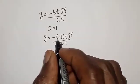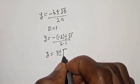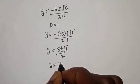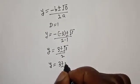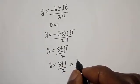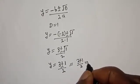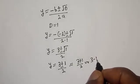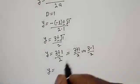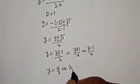y equals 3 plus or minus square root of 1, all over 2. Since square root of 1 is 1, y equals 3 plus 1 over 2, or 3 minus 1 over 2.